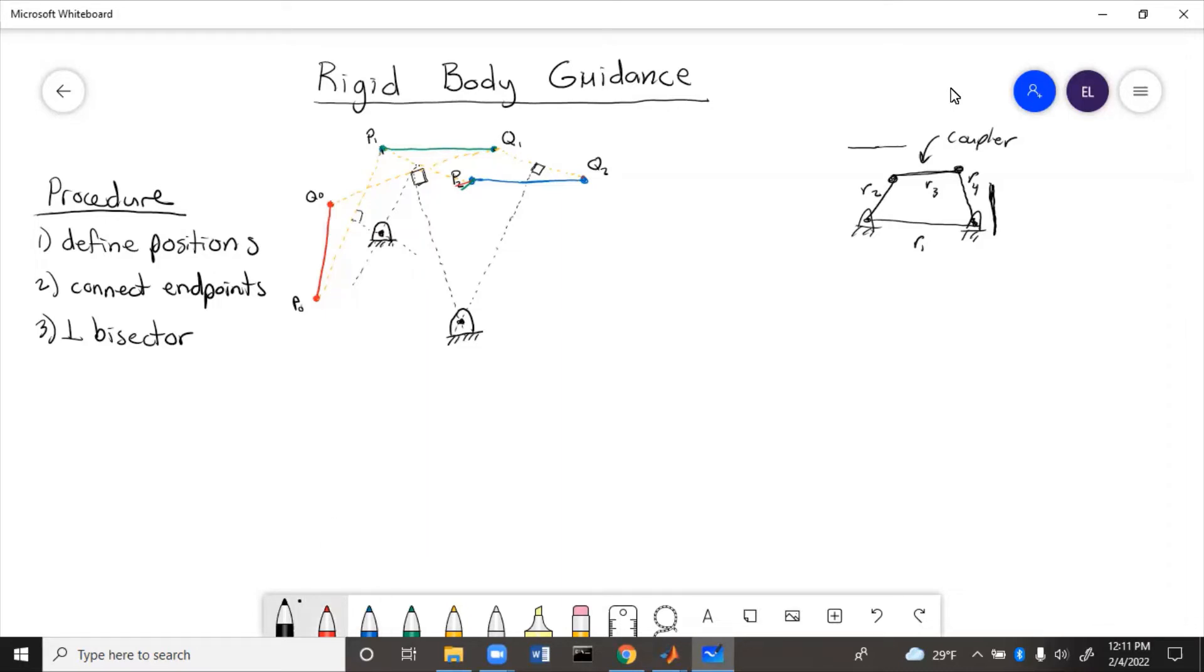So if we draw the linkage in these different positions, say the original position, so that would be one, and then the middle position. So you can see that the size of R2, and the size of, or actually this is R2, this is R4, basically stayed the same. We have R4, R2, and then finally the last position, R4, R2.